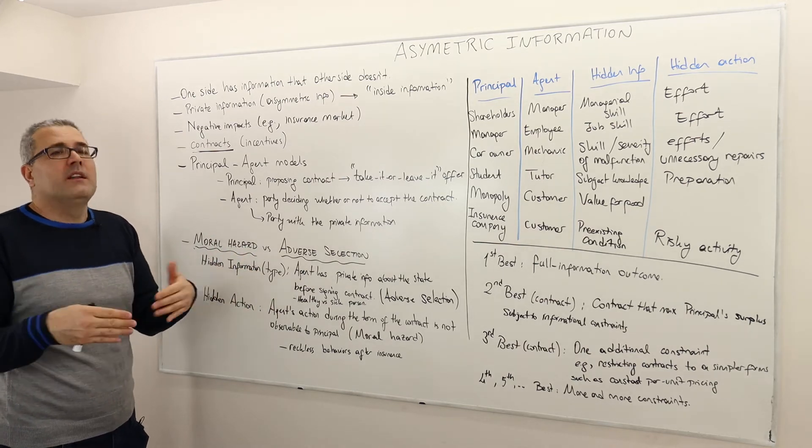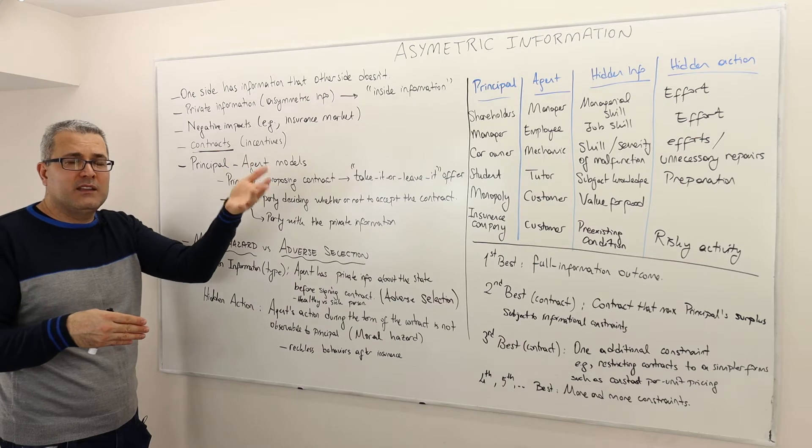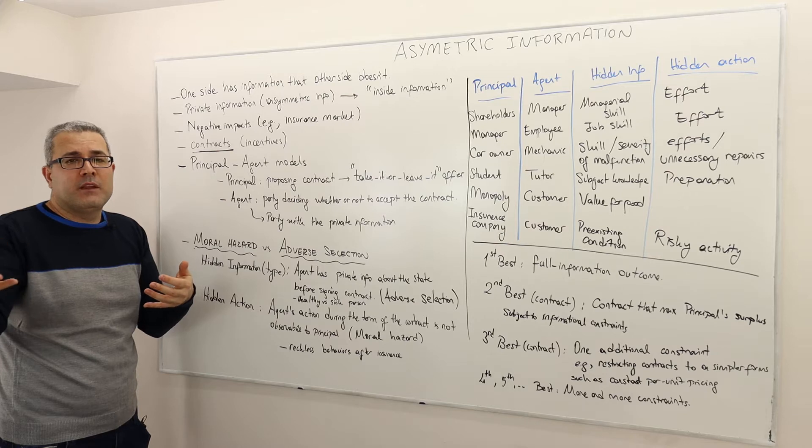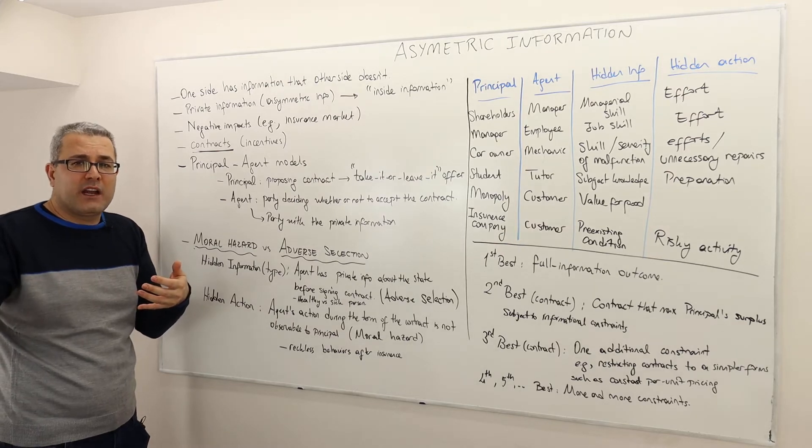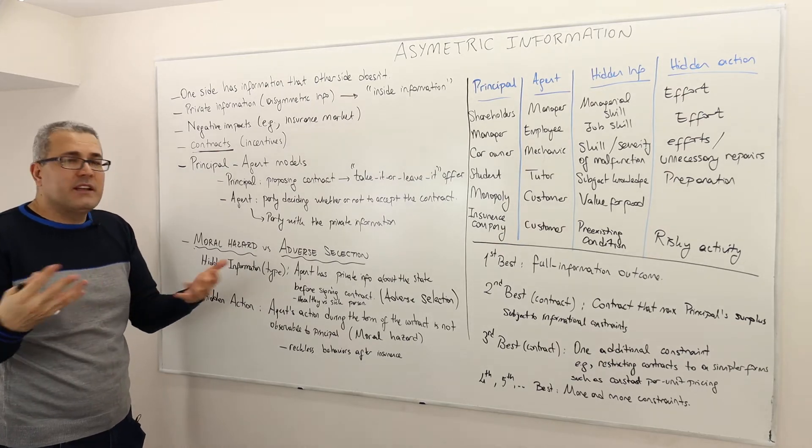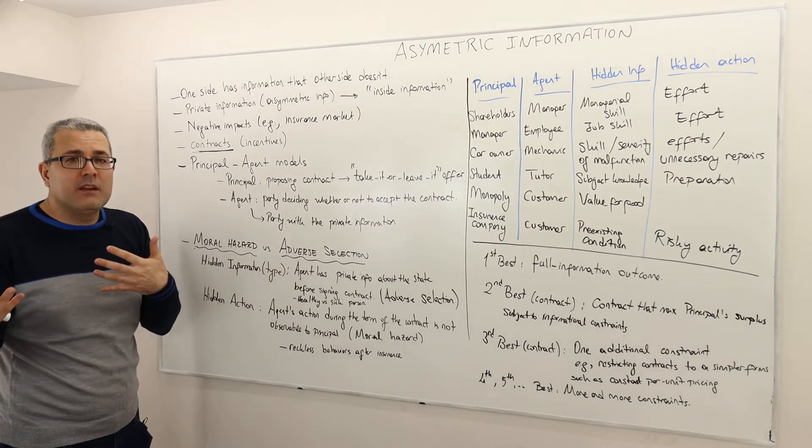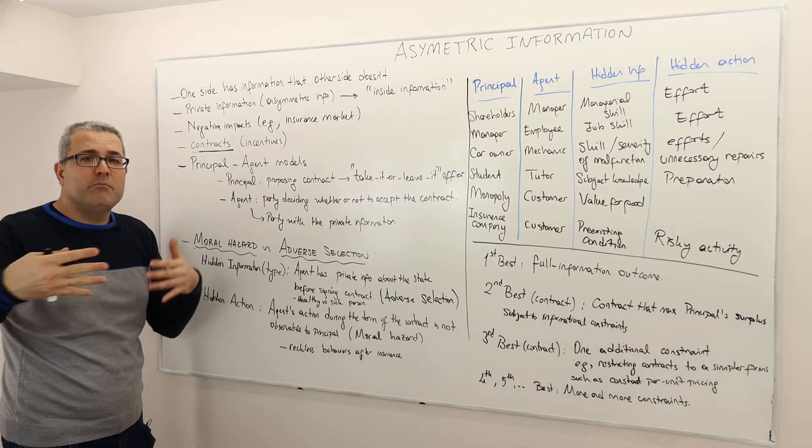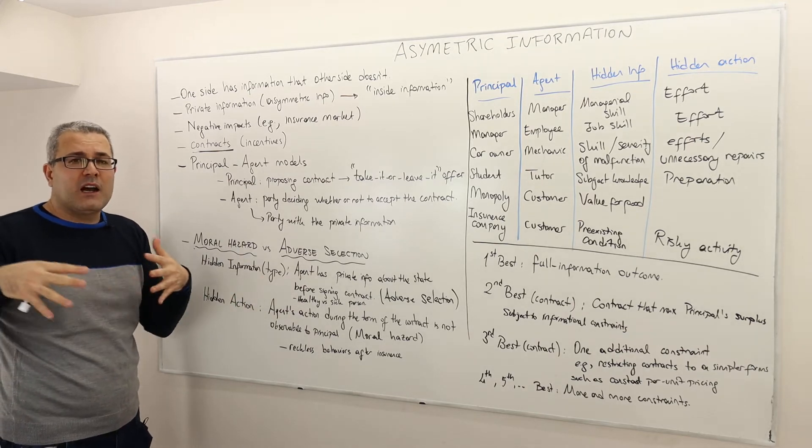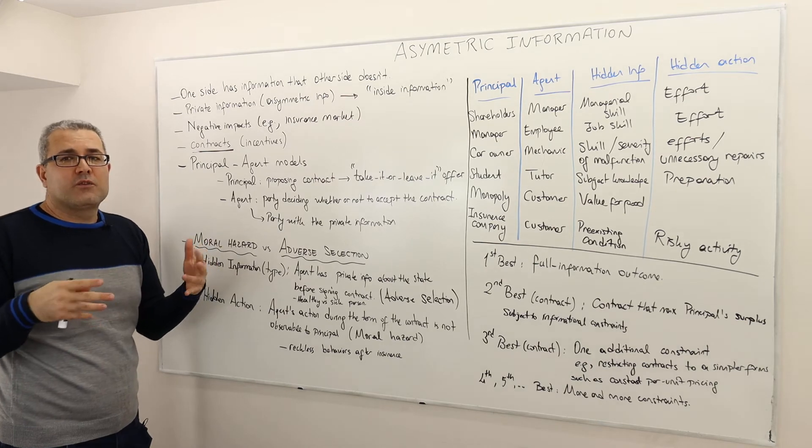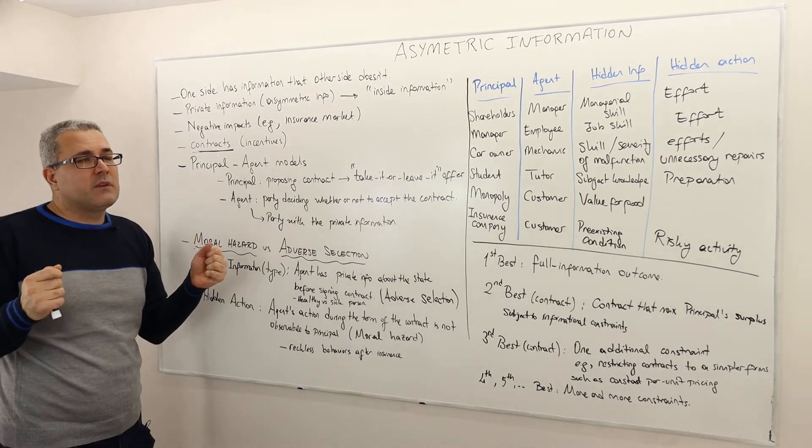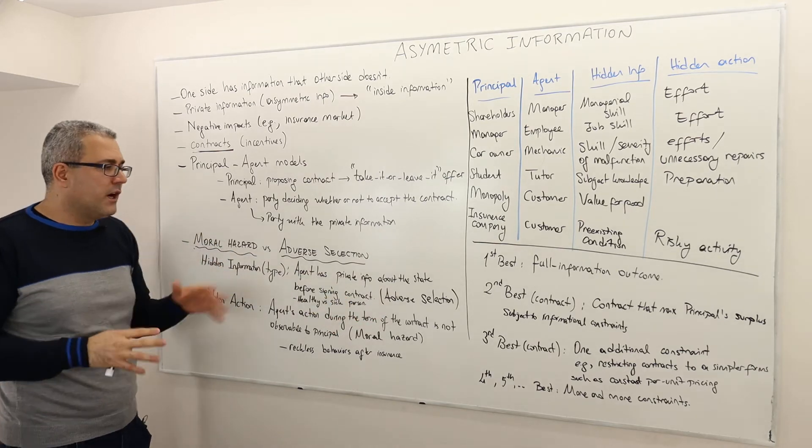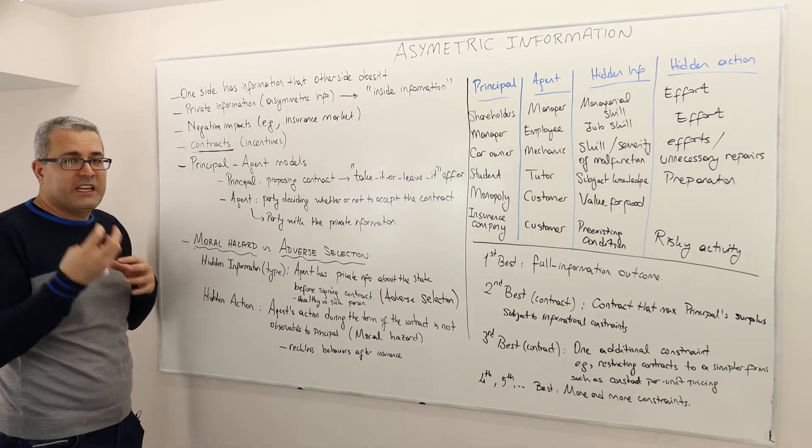And so therefore you just hope that the healthy guy is going to buy the contract which is designed specifically for him or for them, and the sick person is going to buy the contract which is designed specifically for them. This may or may not happen depending on how well you design those contracts. And so the selection made by the customers could result in an outcome which is not what you were looking for. This is why we call it also adverse selection.